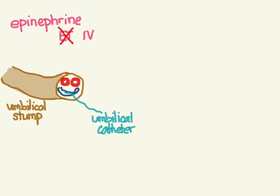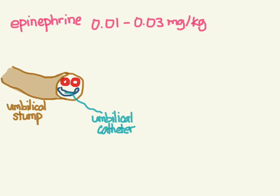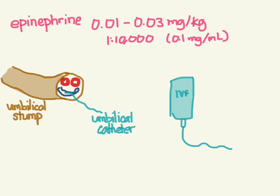The dose of epinephrine is 0.01 to 0.03 milligrams per kilogram. Use the 1:10,000 dilution — the more dilute one, which is about 0.1 mg/mL — not the concentrated 1:1,000. Higher doses have not been shown to help. Consider IV fluids if there's blood loss, suspected hypovolemia, poor perfusion, or failure to respond — give a 10 cc/kg bolus.